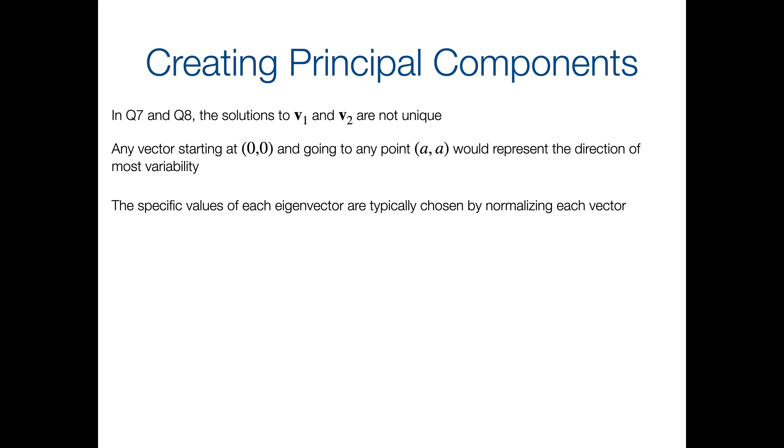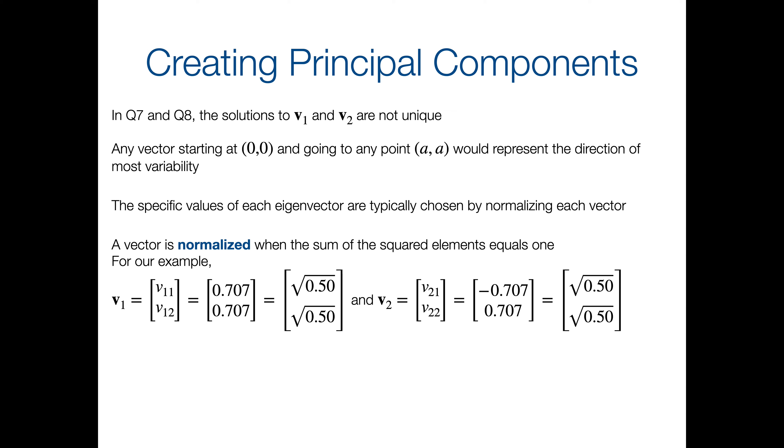Well, the specific values of each eigenvector are chosen by normalizing the vector. So what does normalizing mean? It means the sum of the squared elements is going to equal 1. So here was some math for our example. Square root of 0.5 and square root of 0.5, that will give us a 1. And note here, signs are completely arbitrary. So we've got two positive 0.707s in V1, we've got a negative 0.707 and a positive 0.707 in V2, it does not matter. So, you know, if you square a negative number, it becomes positive. So that really wouldn't mess us up here. So signs are arbitrary.